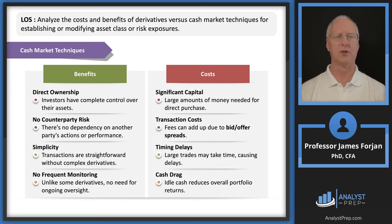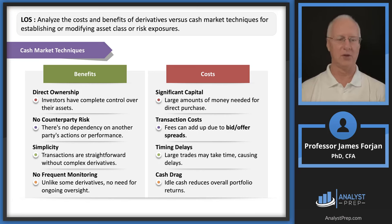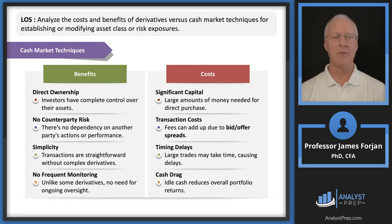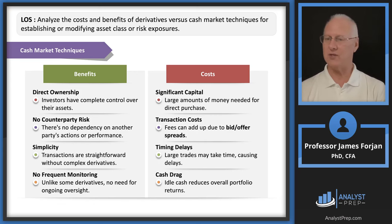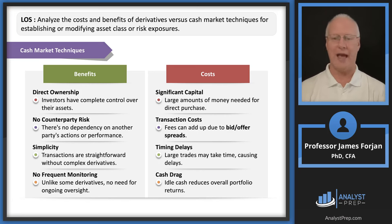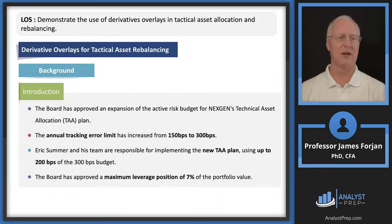What do we like about cash markets? Direct ownership, simplicity — you own it directly, no daily settlement, and no counterparty risk. What don't we like? When you buy an apartment building, you have to put up the capital right now — significant amounts of capital required. There are lots of transaction costs beyond the bid-ask spread, including adverse selection and information costs, timing issues, and cash drag.